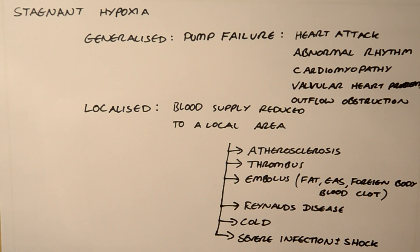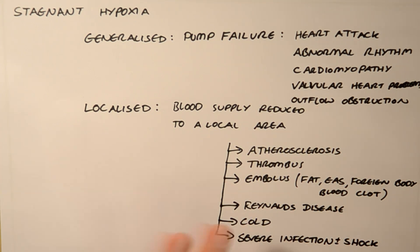That's stagnant hypoxia. The blood may be fully saturated, the red cells may be fully saturated with oxygen, but it simply cannot get to the tissues where it needs to be. The very last one is looking at hypoxia from a cellular level. This is called histotoxic hypoxia.